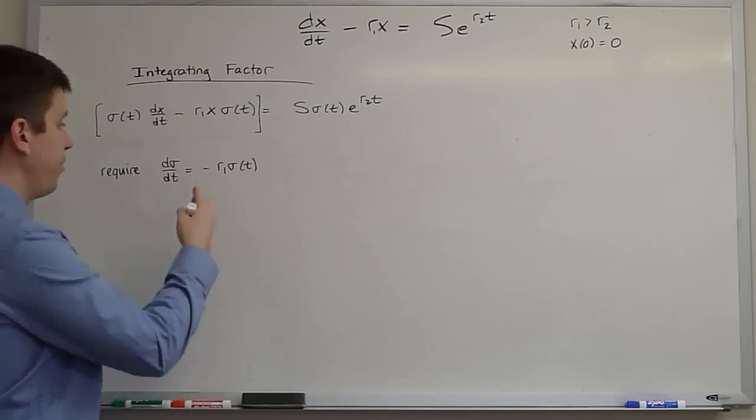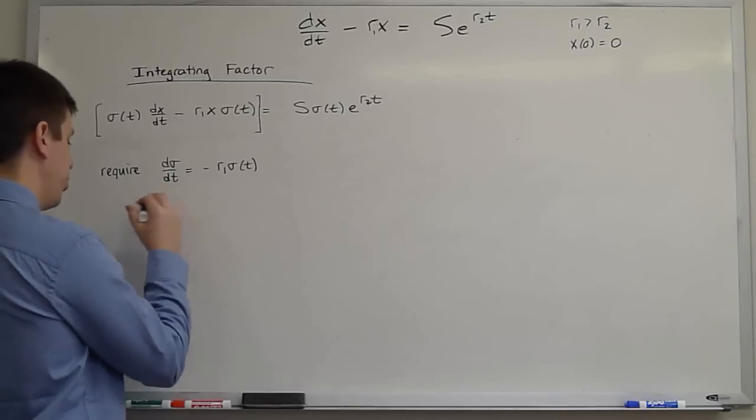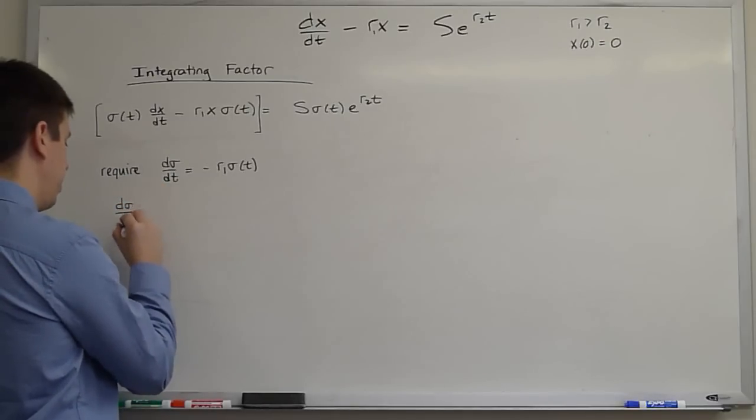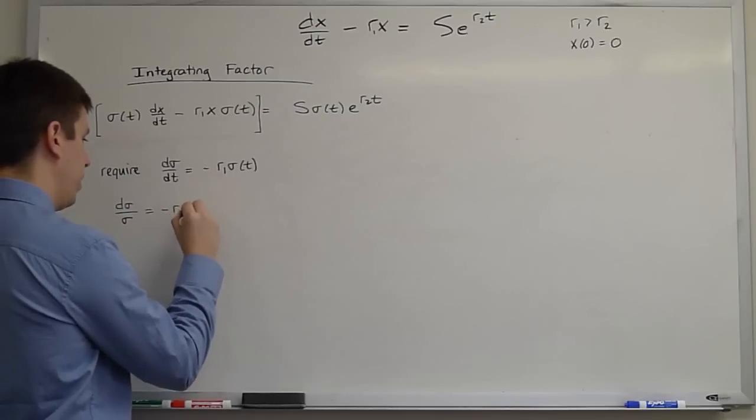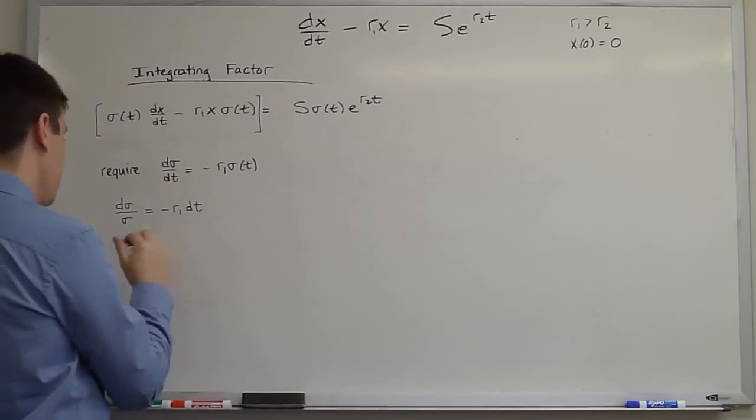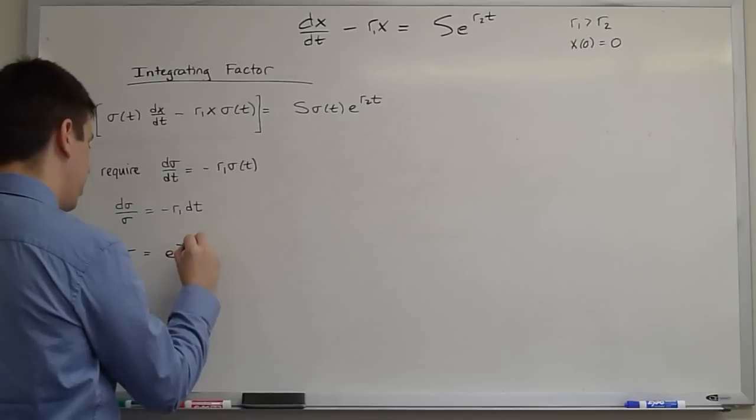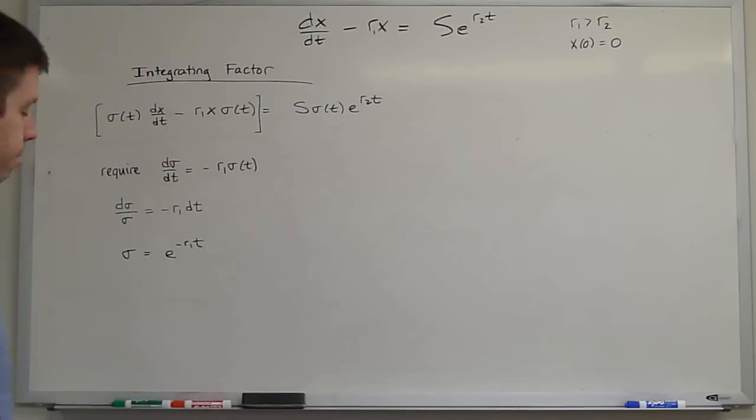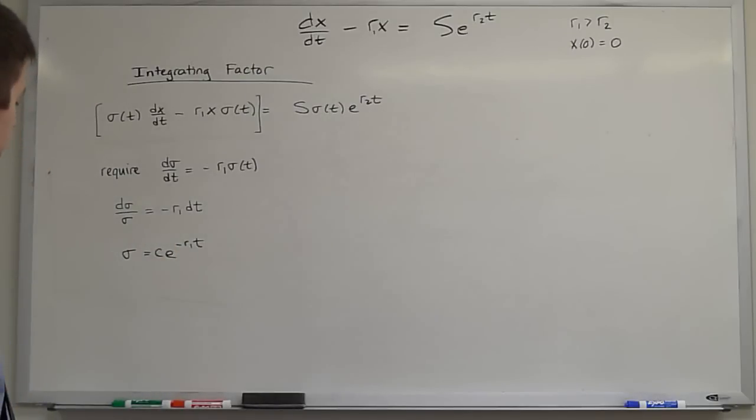This is a homogeneous linear first order equation for sigma. We can solve it by separation. d sigma over sigma is negative r1 dt. And so sigma is e to the minus r1 of t times the constant, integration constant.